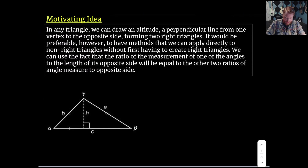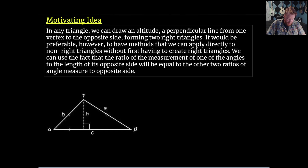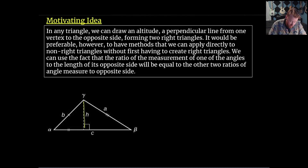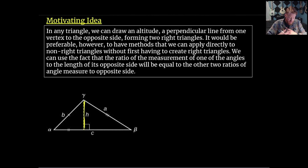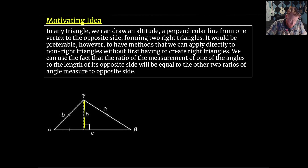In any of these oblique triangles, we could always drop in an altitude — a perpendicular line from one vertex to the opposite side — and make two right triangles, then apply trigonometry. But it would be nice if we could cut to the chase and not have to draw an altitude every time. So what we're going to do is use the fact that the ratio of the sine of one angle to the length of its opposite side will always equal the other two such ratios.